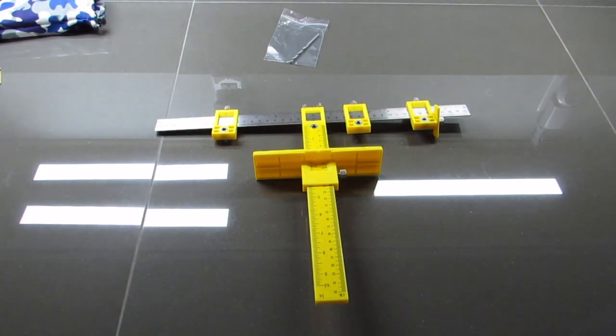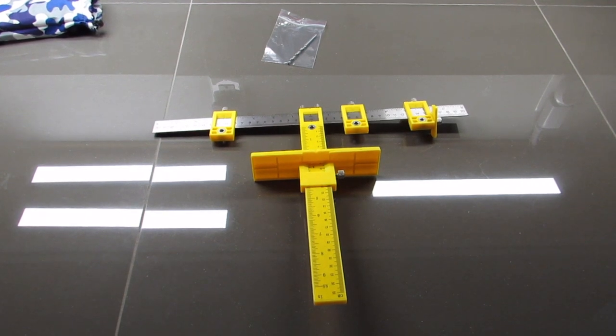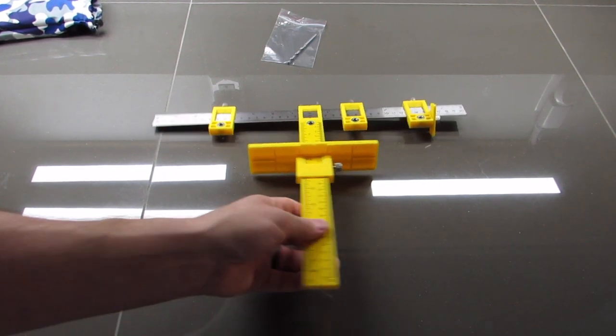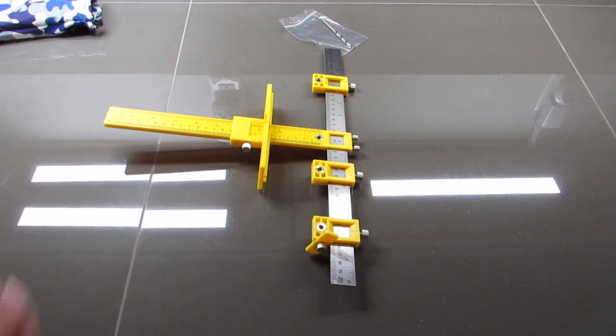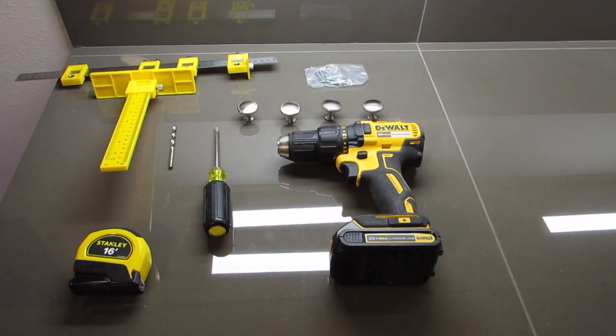So the next step is going to be to determine where you want the hole placement. And to determine that, the way you do that is you get your hardware and you take a look at the actual cabinet door where you want it. So let's do that next.